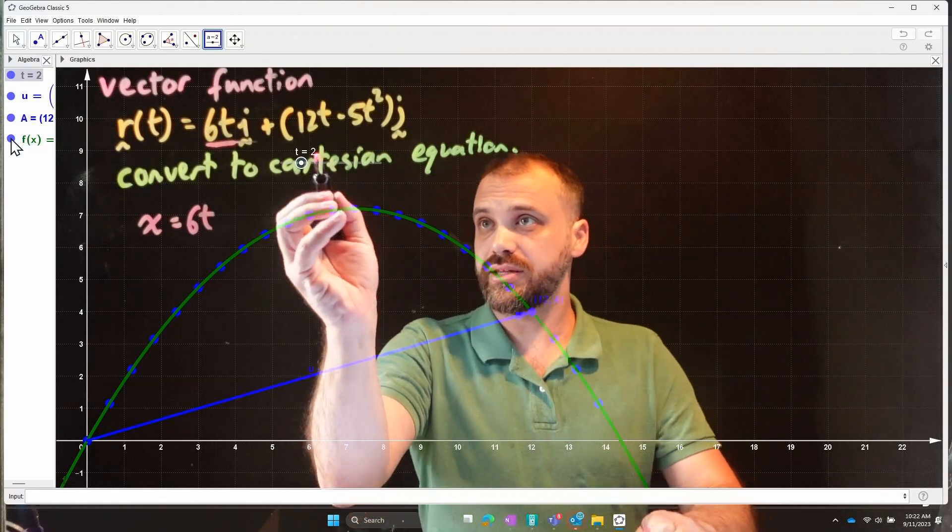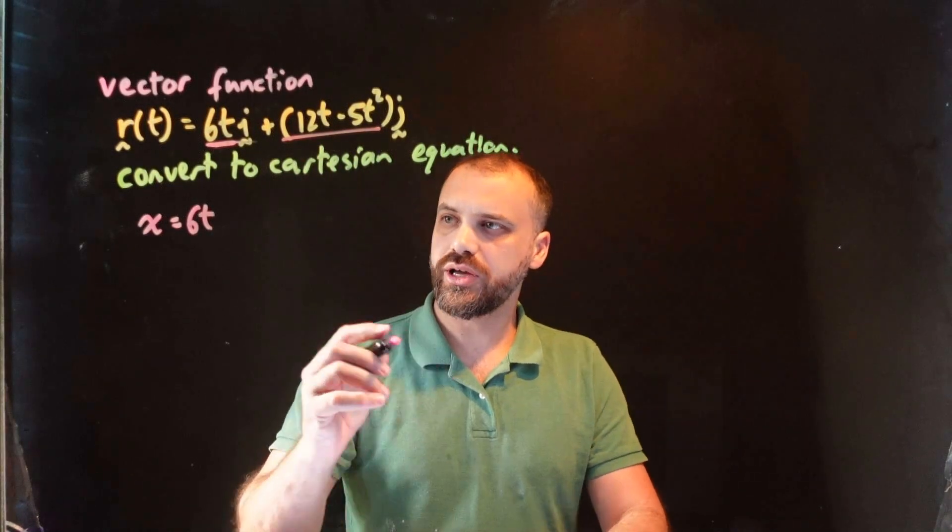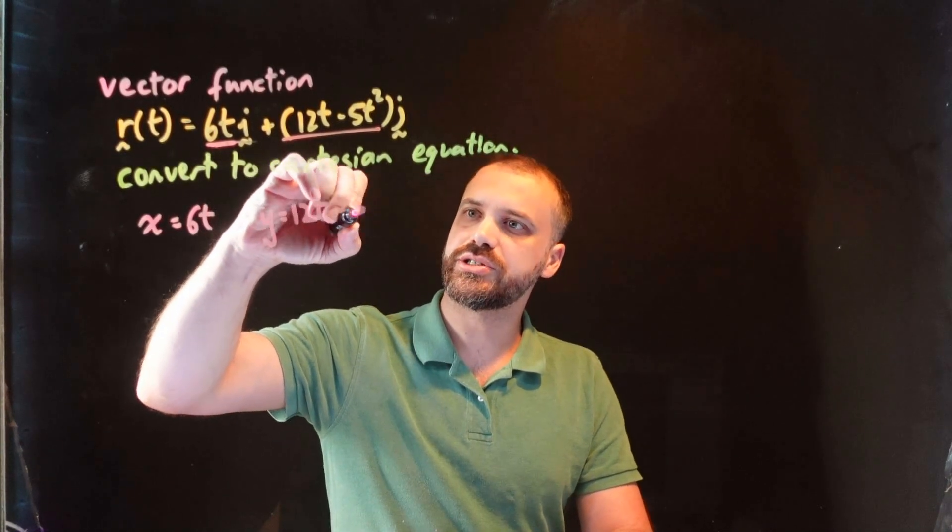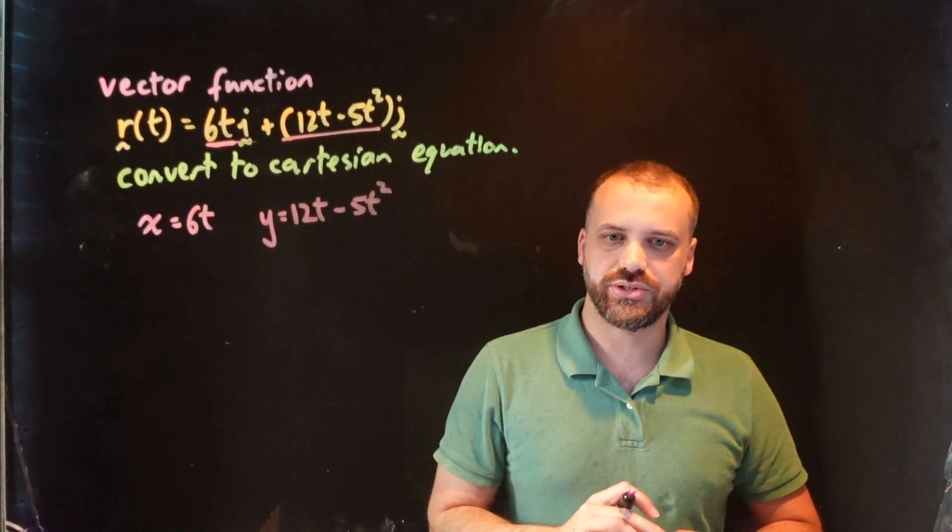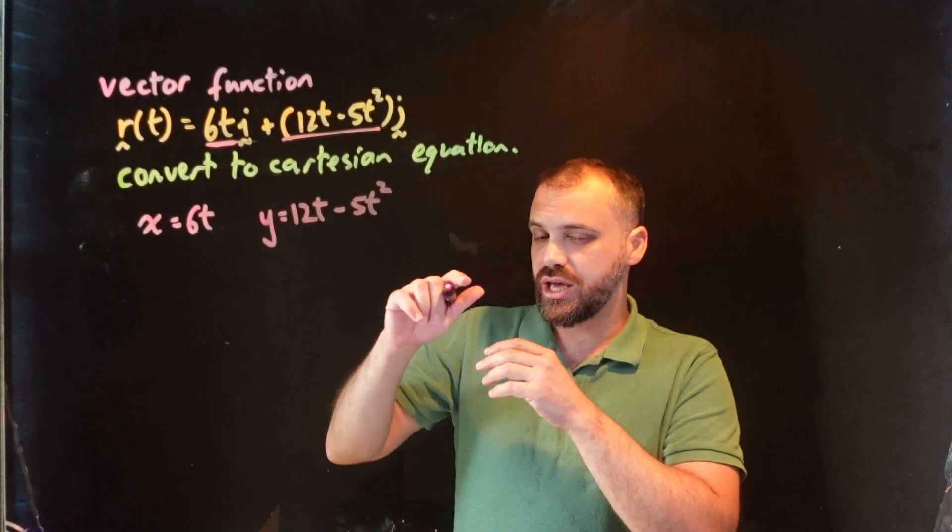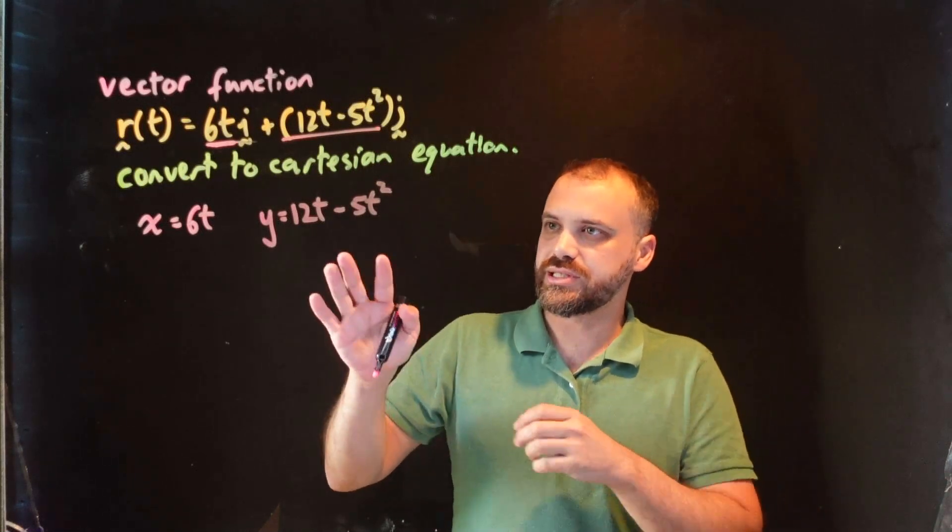And similarly, we can say that the y-coordinate of our dot, we can say that the y-coordinate of our dot is equal to 12t minus 5t squared. Sweet. This is great. And so now when I say you should be thinking simultaneous equations here, what we can do is sub one of these equations into the other equation.